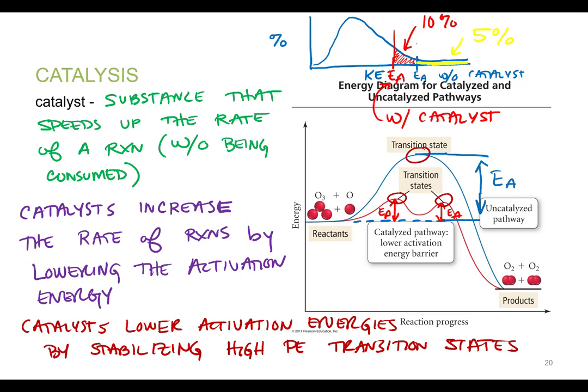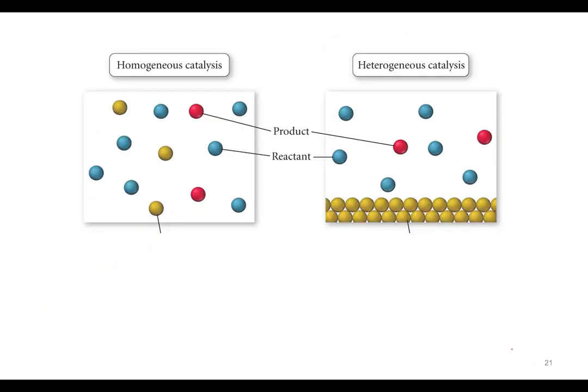Catalysts lower the activation energy by stabilizing the high potential energy transition states. The mechanism for doing that is different for every catalyst and every reaction — each catalyst has a different mechanism for stabilizing the reactive molecules. We'll go over two examples that have real-world applications. To do that, we need to talk about two different types of catalysis.